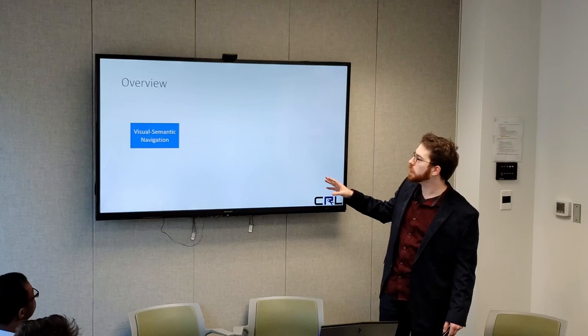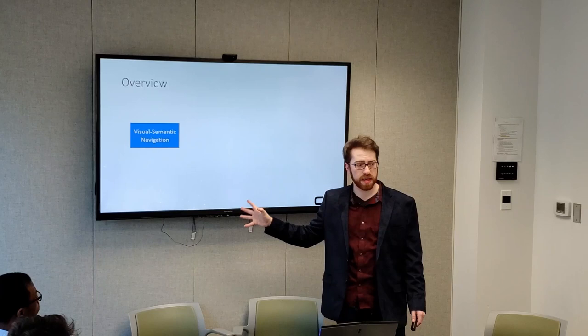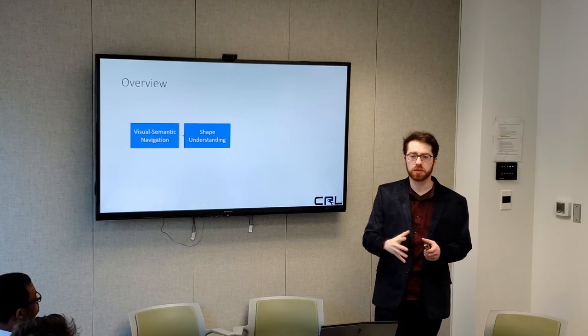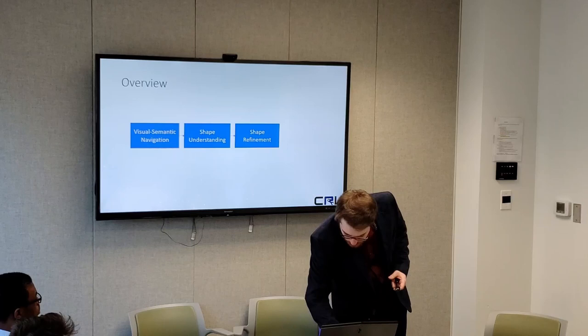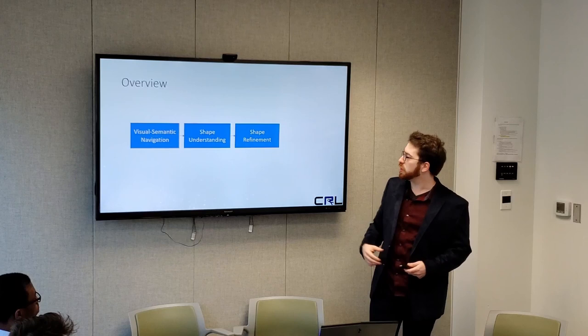The overview of my approach is to perform visual semantic navigation to a particular object of interest. Once we're at that object, we do shape understanding to predict the geometry of the object. Because we're using a mobile robot, we can actually do next best view shape refinement planning, capture a second view to enhance the completion of the object, and then use grasp planning to pick the object from the table.